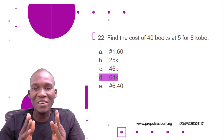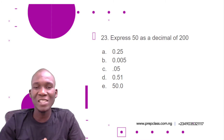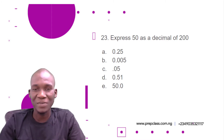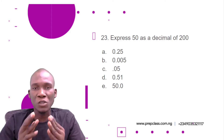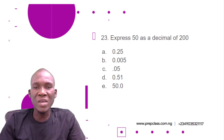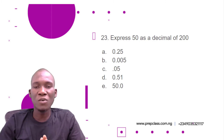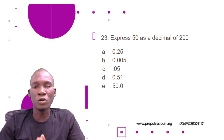The next question is question number 23: express 50 as a decimal of 200. The options are: A) 0.25, B) 0.005, C) 0.05, D) 0.51, E) 50.0.